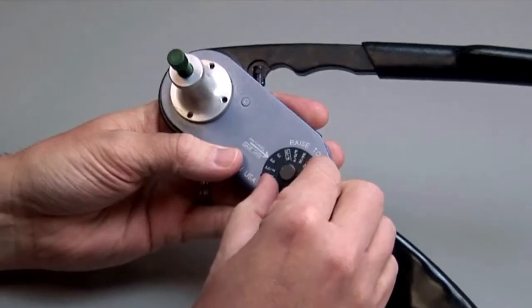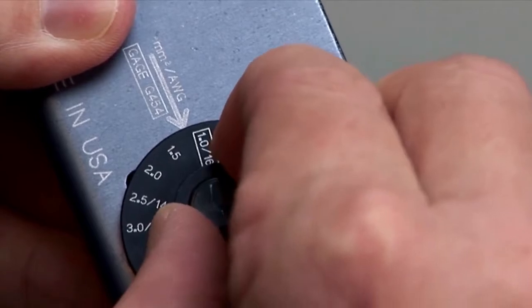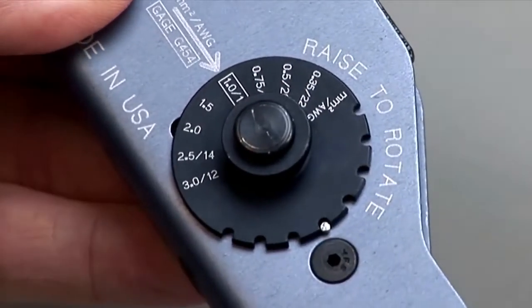Begin with a stripped wire. On the crimp tool, raise the selector knob and rotate it until the arrow is aligned with the wire gauge to be crimped.